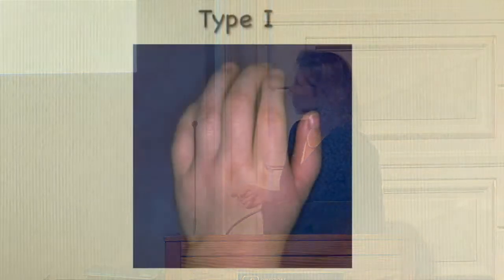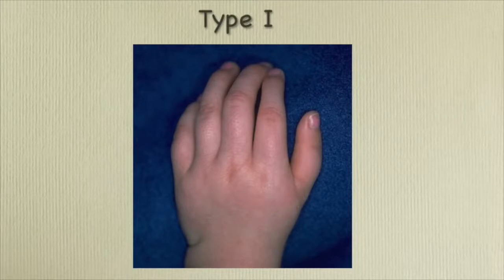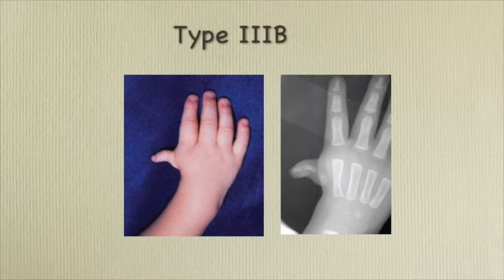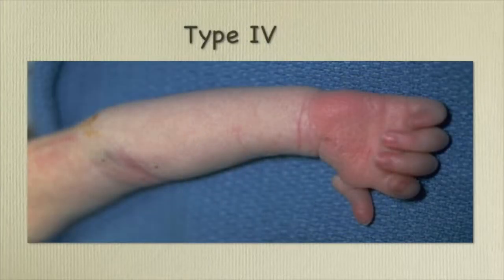Here's a type one with mild hypoplasia — you don't have the thenar eminence visible and the thumb is more like a finger. Here's a 3B — that's the critical one. Even though the child is too skeletally immature to see the carpal bones, you get a whispering of the metacarpal, and you can be quite certain there is no CMC joint. Here's the type four — a floppy little thumb you want to take off early, and then consider a pollicization when developmentally appropriate.